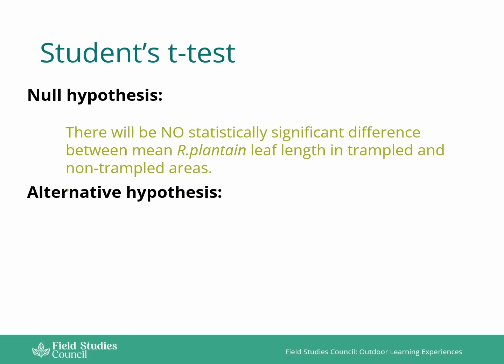You can see here that we've written there will be no statistically significant difference between the mean ribwort plantain leaf length in trampled and non-trampled areas. The alternative hypothesis is going to be very similar, but instead of saying no, we're going to say there will be a statistically significant difference.